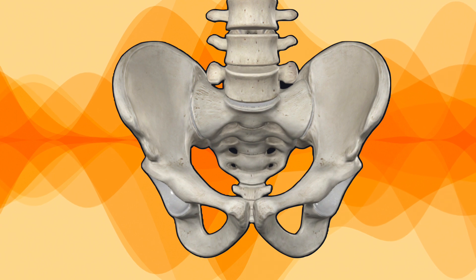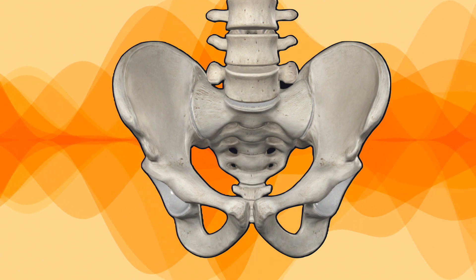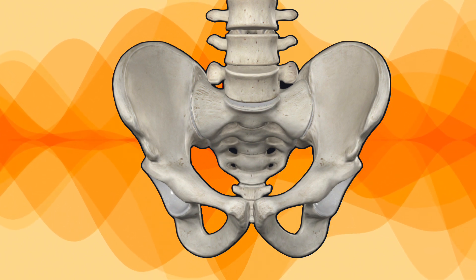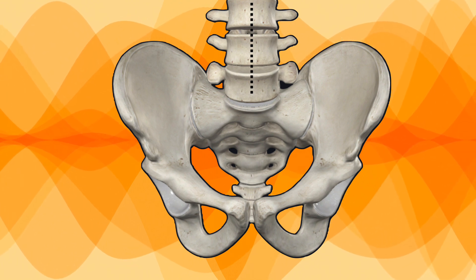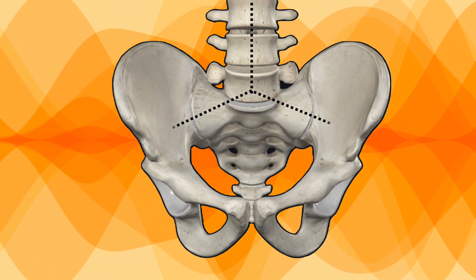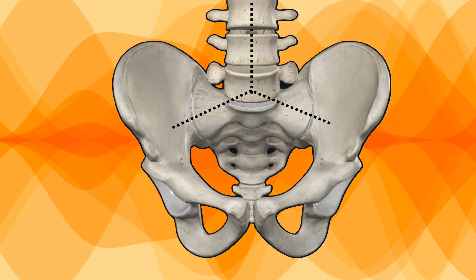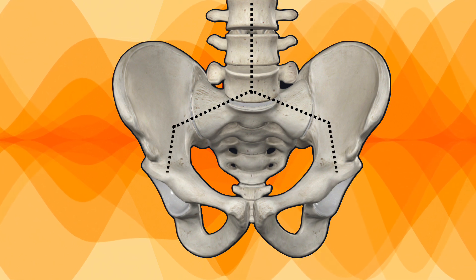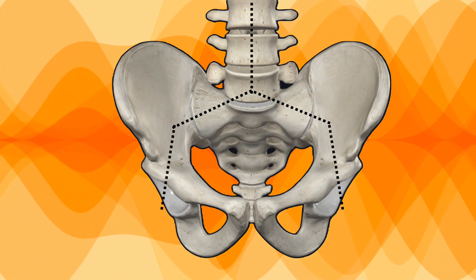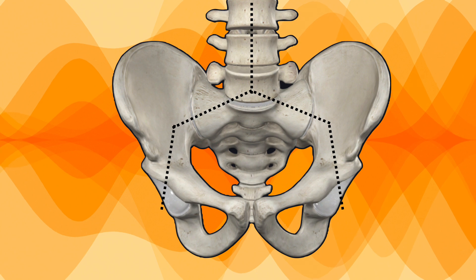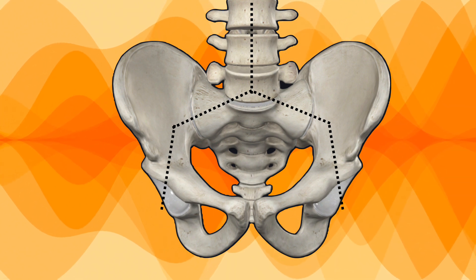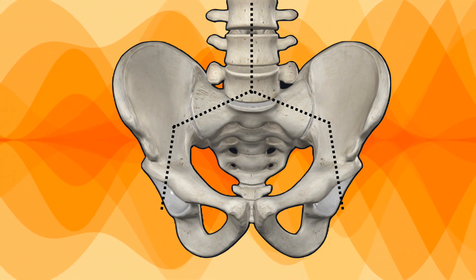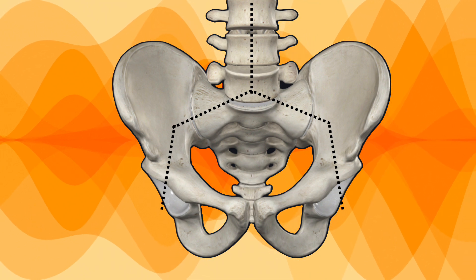Let's look at the weight-bearing axis. We should know how the weight passes from the pelvis for making a proper management plan. The weight-bearing axis comes through the spine, then goes from the sacroiliac joint to the ilium, and from the ilium the weight passes through the acetabulum to the hip or the proximal femur. We should be able to maintain this axis so that we can make the patient weight-bearing.